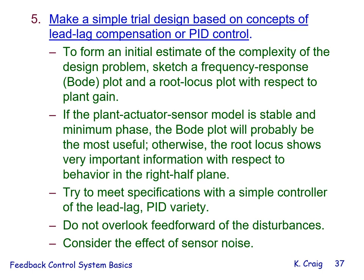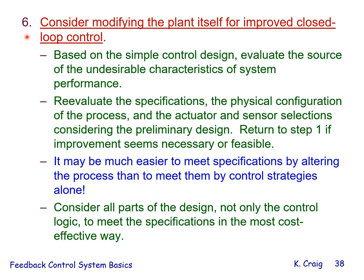Step 6 — probably the most important step: consider modifying the plant itself for improved closed-loop control. Based on the simple control design, evaluate the source of undesirable characteristics of system performance. Re-evaluate the specifications, the physical configuration of the process, and the actuator and sensor selections. Return to Step 1 if improvement seems necessary. It may be much easier to meet specifications by altering the process than by control strategies alone.